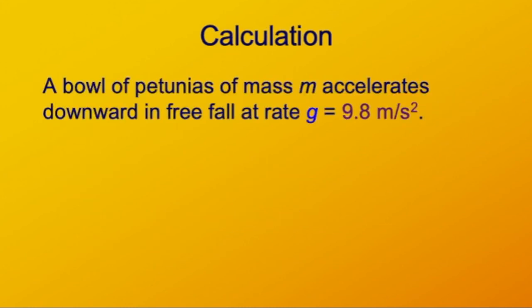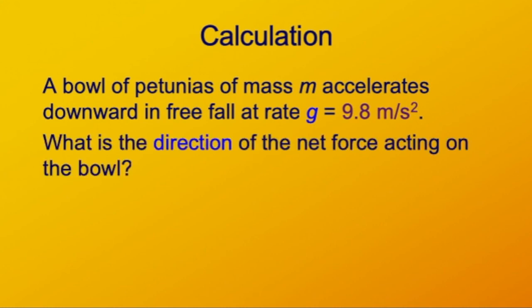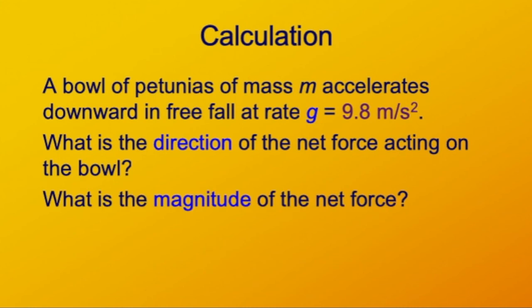Another example for you. A bowl of petunias with mass M. We're not giving you the mass. You have to do this symbolically. Accelerates downward in free fall at a rate of 9.8 meters per second per second. First, what is the direction of the net force acting on the bowl? And then second, what is the magnitude of the net force acting on this bowl of petunias? And last, what does the bowl of petunias say?